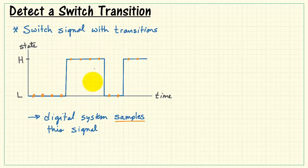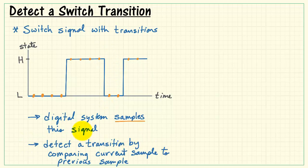In particular we're looking for either a rising edge or a falling edge. And we detect these transitions by comparing the current sample to the previous sample.